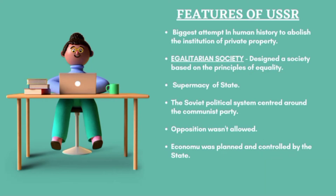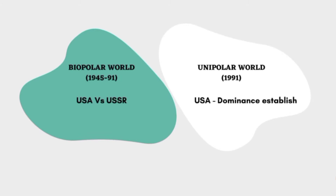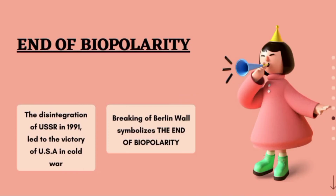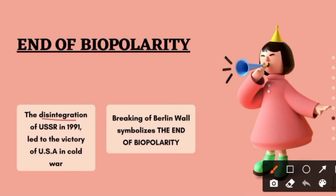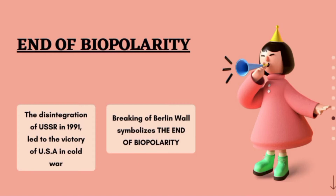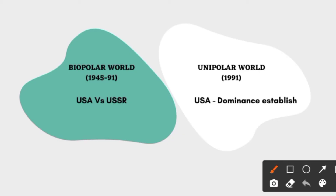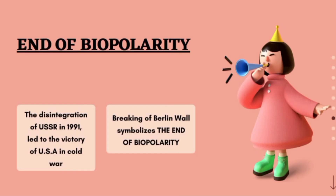Before going further, let us revise a little about Chapter 1. In the Cold War, it was a bipolar world because two superpowers were dominating. But in 1991, the USSR disintegrated — the 15 countries it comprised broke apart. So the USSR no longer exists as a superpower. Obviously, the USA would win. So the bipolar world changed into a unipolar world — 'uni' meaning one — and the USA is now the superpower dominating the world.